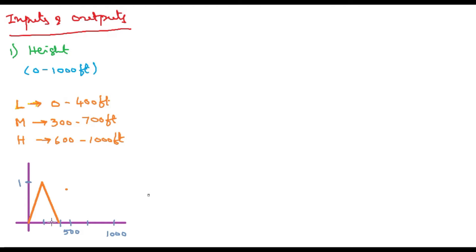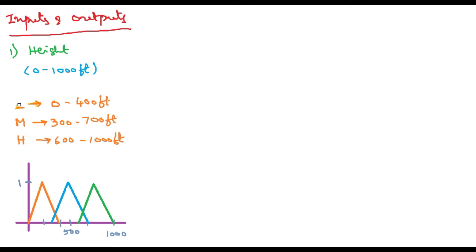For medium, it starts at 300 and the midpoint is at 500, and it goes up to 700. So the parameters are 300, 500, 700. For high, it spans 600 to 1000, so the maximum is at 800. So the parameters are 600, 800, 1000. In this way we can design the membership functions for all three: low, medium, and high.